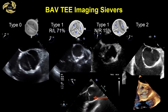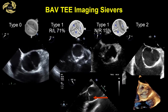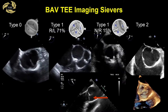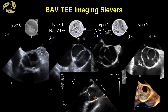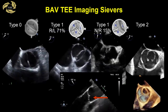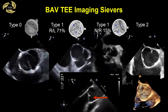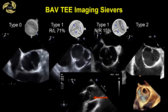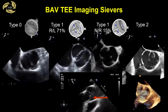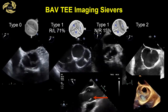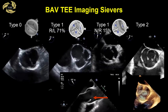Shown here are the TEE mid-esophageal aortic valve short axis views of different bicuspid valves based on the Severs classification: Type 0, Type 1, Type 2. There is an associated systolic doming of the conjoined cusps seen in the mid-esophageal aortic valve long axis view. Often, after making this diagnosis, this is where we stop and inform the surgeon. But what additional information will the surgeons require if they want to repair the defective valve?